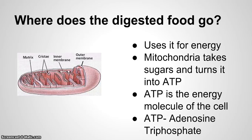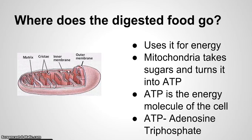So where does the digested food go? It goes to the mitochondria. The mitochondria is where we take that energy and make it into usable energy. The mitochondria takes the sugars and turns them into ATP through a process called cellular respiration. ATP is the energy molecule in the cell, and ATP is short for adenosine triphosphate. This is a mitochondria, and it has many inner folds — we're going to learn about that when we talk about cellular respiration next unit.